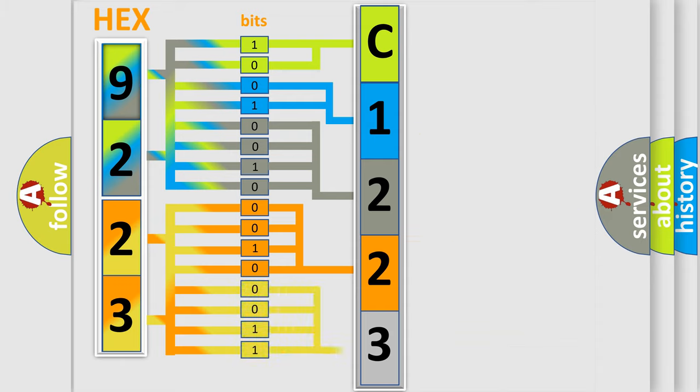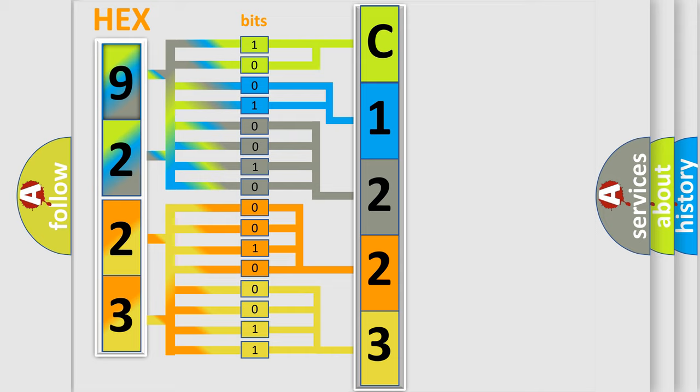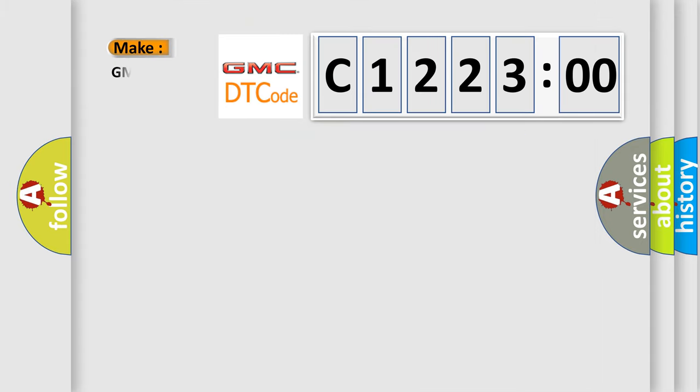A single byte conceals 256 possible combinations. We now know in what way the diagnostic tool translates the received information into a more comprehensible format. The number itself does not make sense if we cannot assign information about what it actually expresses. So, what does the diagnostic trouble code C122300 interpret specifically for GMC car manufacturers?